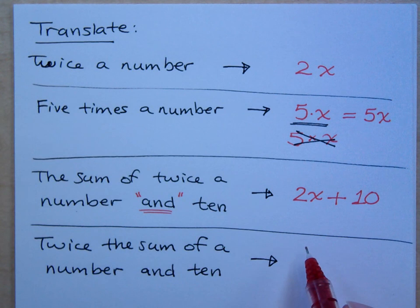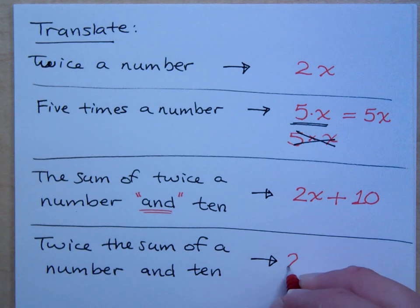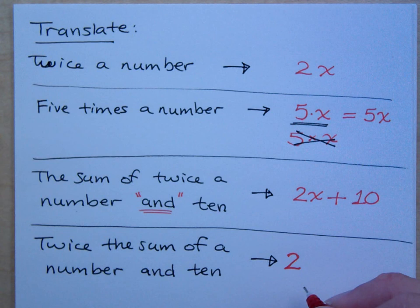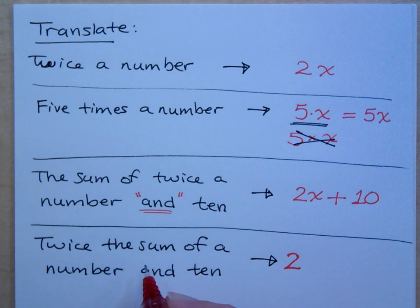Here, what do I start with? I start with twice. That means two times something, right? So this is two times what? Does it say two times x? Does it say twice a number? It says twice what? Twice the sum. So that means everything here is going to be multiplied times two. Twice that group.